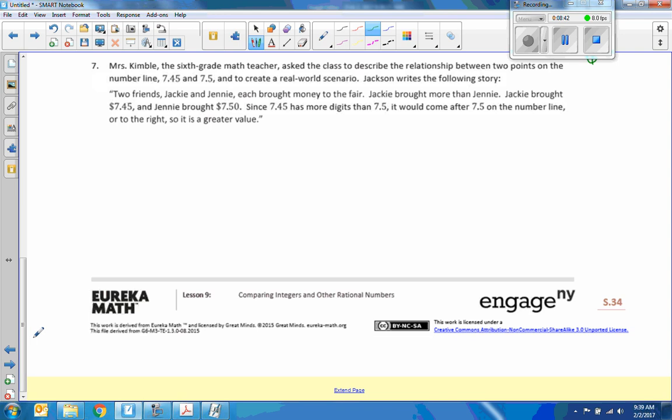Mrs. Kimball, sixth grade math teacher, asked the class to describe the relationship between two points on the number line, 7.45 to 7.5 and create a real-world scenario. Jackson writes the following story. So the first thing I would do is try a number line. And let's make this 7.5 and this 7.45. And then way down here, it's not to scale but zero would be over here. So 7.45 is less than 7.5. And let's see what this guy says. So Jackson says, two friends, Jackie and Jenny, each bought money and brought money to the fair. Jackie brought more than Jenny. Jackie brought 7.45 and Jenny brought 7.50.